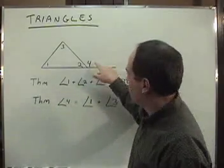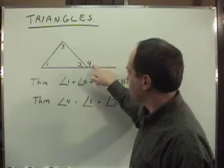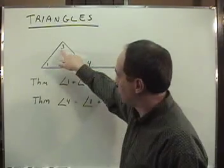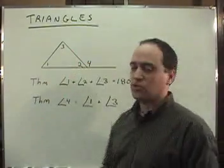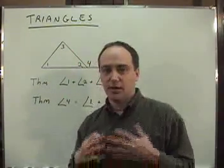The other theorem though may be a surprise. Angle 4 is always going to be equal to the sum of angle 1 and 3. It's what's stated here, so angle 4 equals the sum of 1 and 3, and we'll see that in a proof.